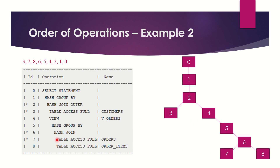The two operations left are 7 and 8. Operation 6 is the parent, and 7 and 8 are both children of operation 6 because they are indented towards the right and on the same level — 7 is on the top and 8 is on the bottom. So I will write 7 on the left-hand side of 6 and 8 on the right-hand side of 6. This is how you create a parent-child relationship tree for the entire execution plan.